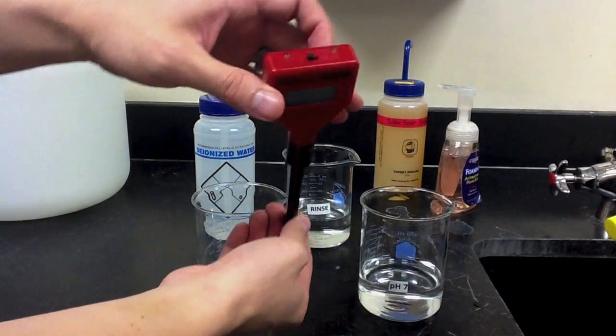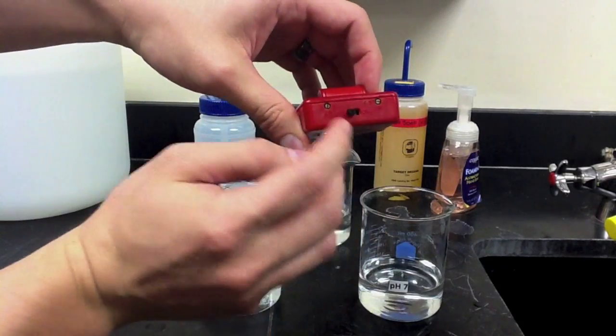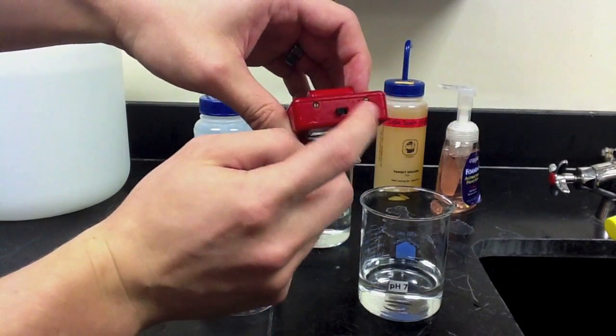If you look at the top of the pH meter, you'll see two screws, one that's labeled pH 7 and one that's labeled pH 4, 10.